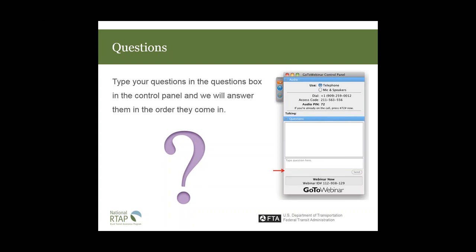Question: Under what conditions may a service connect to Amtrak or an airport and be considered eligible intercity bus service? Answer: If it is also connecting to the intercity bus network. If the intercity bus stop is in the same place as the Amtrak station, that's fine. As long as there is a connection to the intercity bus network, it won't be disqualified even if other connections are also present.